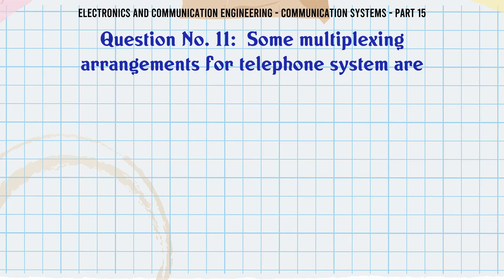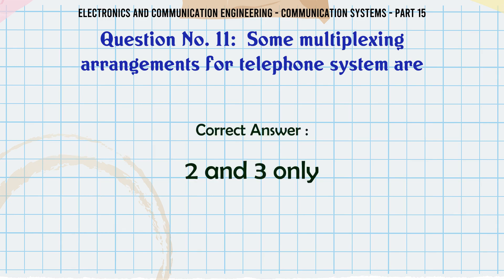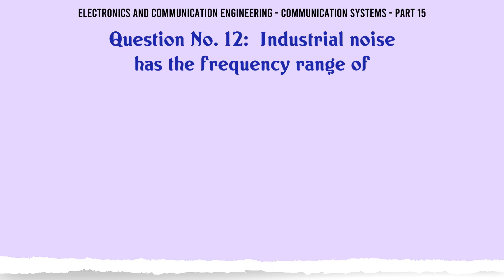Some multiplexing arrangements for telephone system are: a 1 only, b 2 and 3 only, c 1 to 3, d 1 and 3 only. The correct answer is 2 and 3 only.